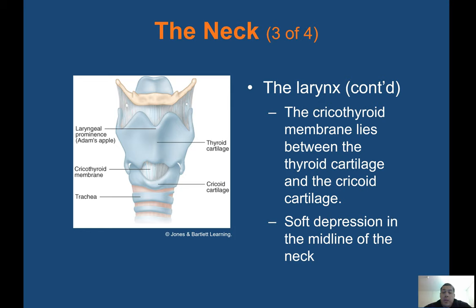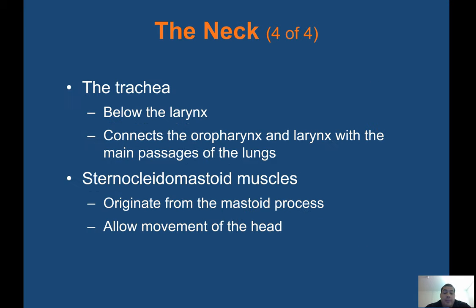The cricothyroid membrane lies between the thyroid cartilage and the cricoid cartilage — it's a soft depression of the midline of the neck. The trachea below the larynx connects the oropharynx and the larynx with the main passages of the lungs. The sternocleidomastoid muscles originate from the mastoid process and allow movement of the head.